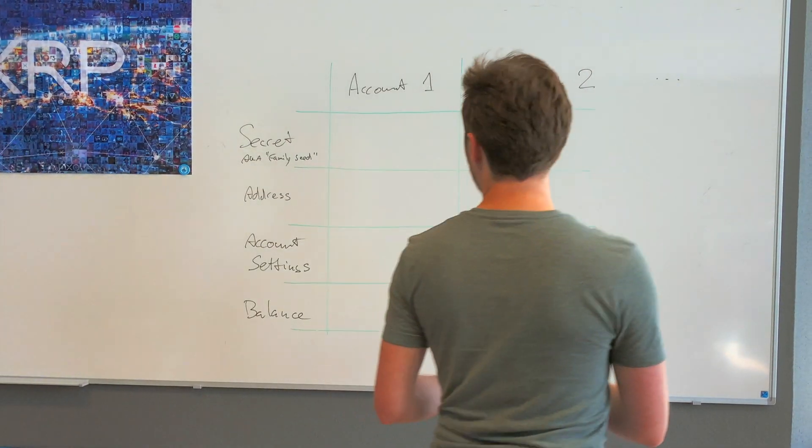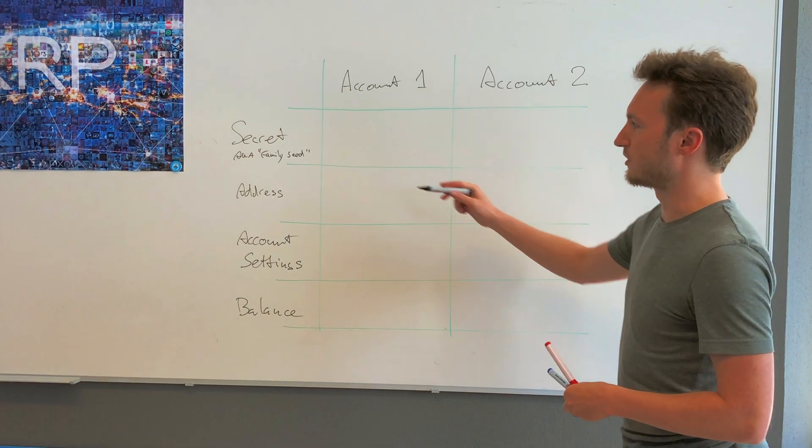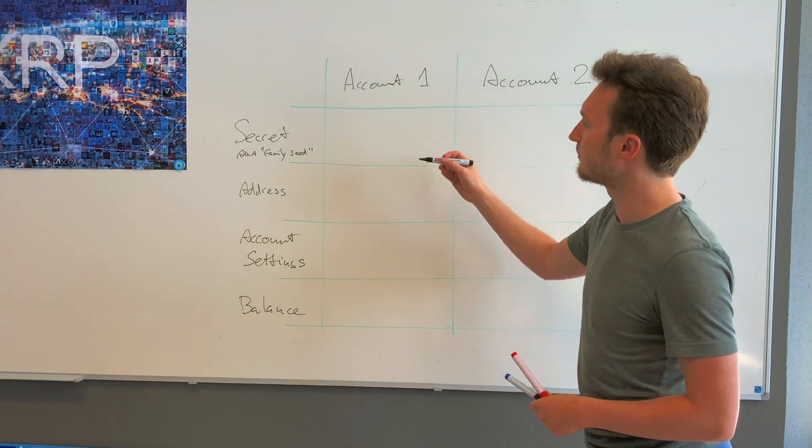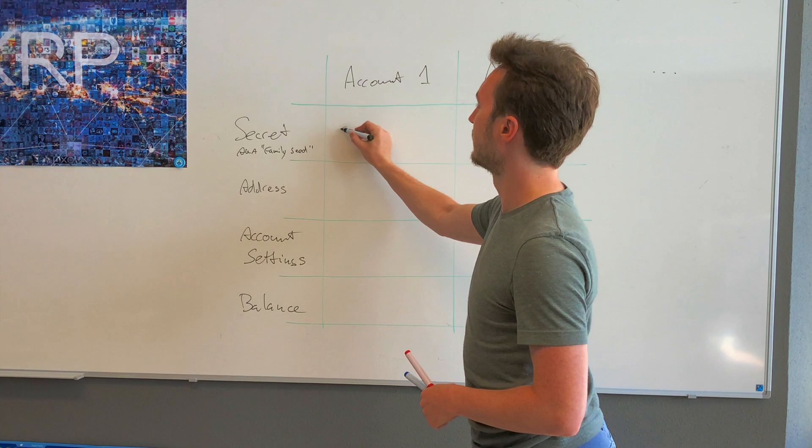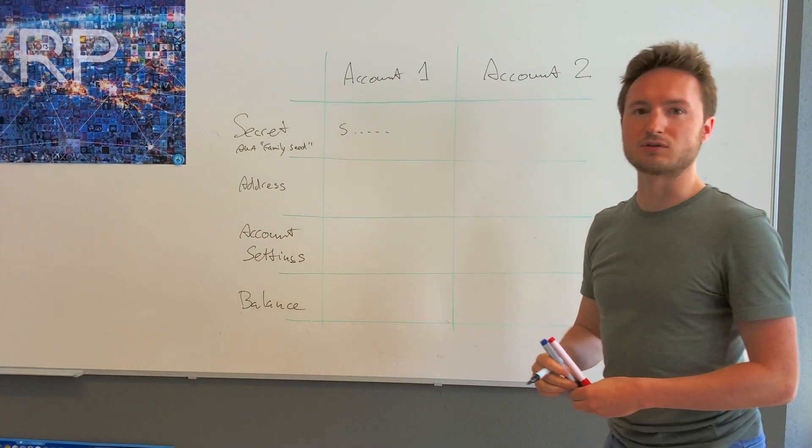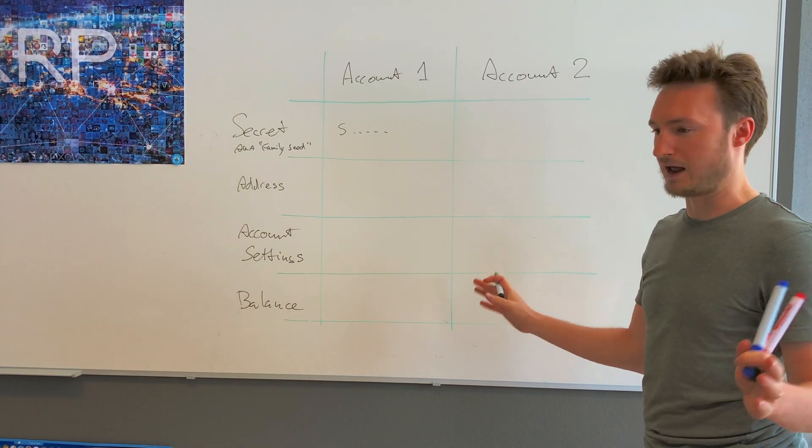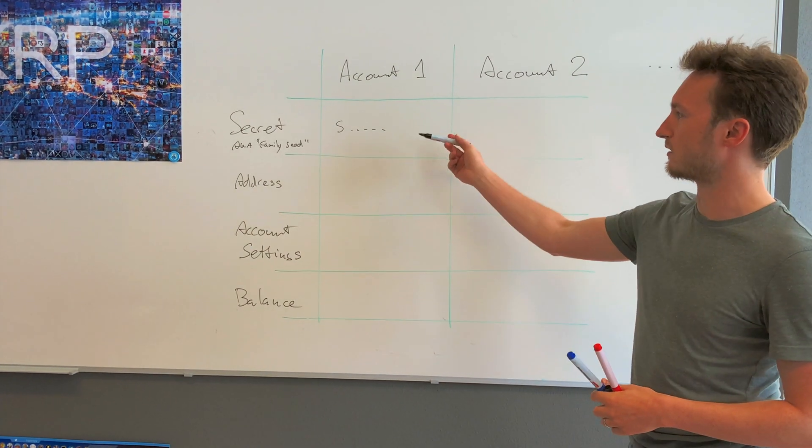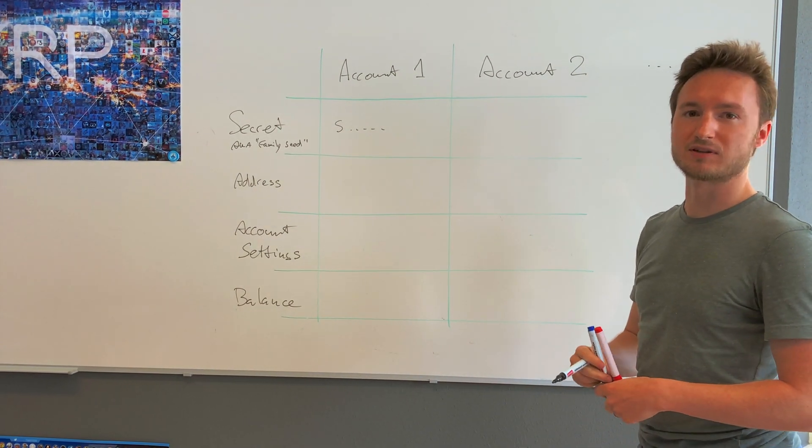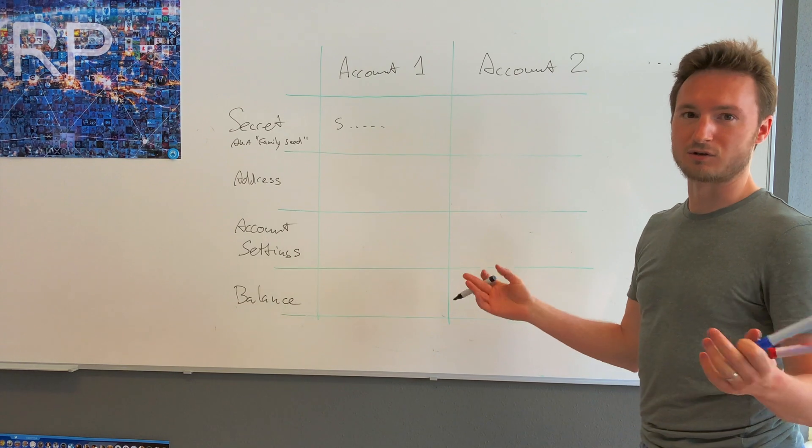A normal XRPL account is based on a secret, also known as a family seed, which starts with a lowercase 's'. That's the thing you need to hide from everybody because as soon as someone gains access to the family seed, your funds are compromised.